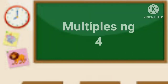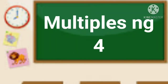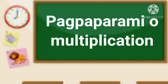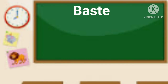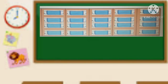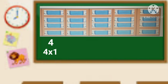Tukuyin naman natin ang multiples ng bilang na 4. Bukod sa pagdaragdag ng common difference, maaari din natin gamitin ang pagpaparami. Balikan natin ulit ang face mask na nasa bawat kahon ni Baste. Ito ay may tigaapat na face mask. Ngayon, ano kaya ang unang multiple nito? Magaling! 4 ang unang multiple. I-multiply ang bilang ng face mask na nasa bawat kahon sa bilang ng kahon. Dahil ito ay nasa unang kahon, i-multiply ang 4 sa 1. So 4 times 1, ang sagot ay 4.